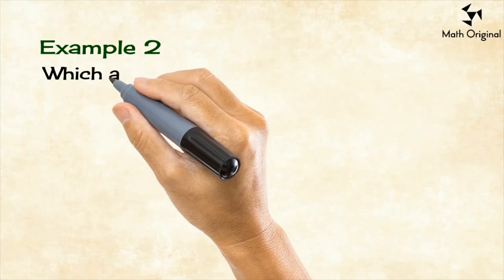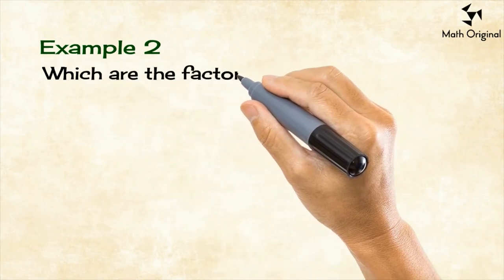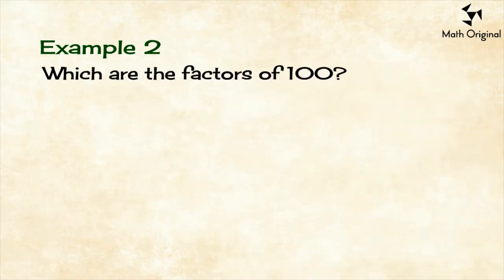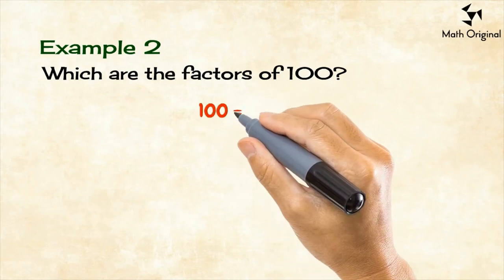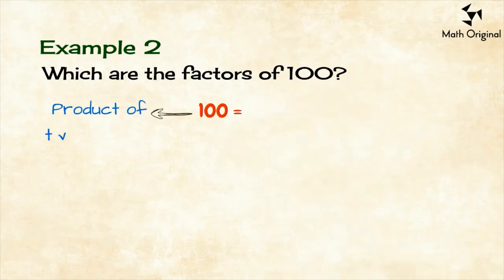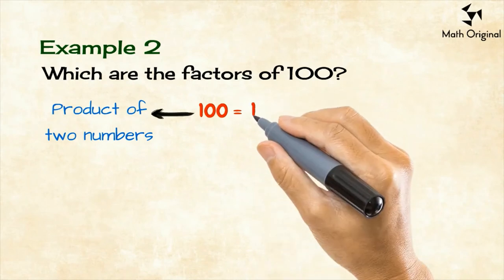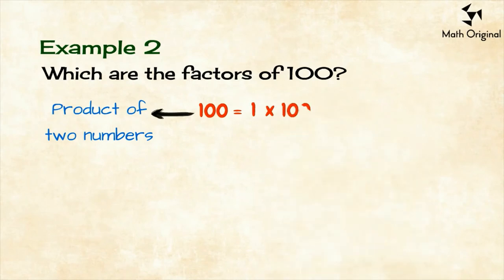Now, let's move on to another example. We're going to find all the factors of 100. We should write 100 as a product of two numbers. We already know the first one is 100 equals 1 by 100.